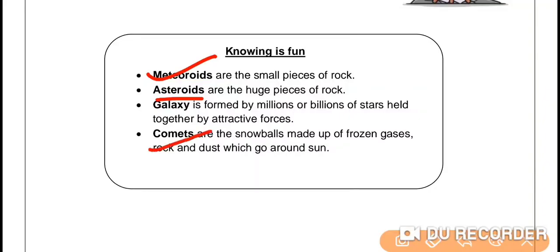What are comets? Comets are the snowballs which are made up of many frozen gases, rock and dust. That's how they, when held together by the attractive forces, go around the sun.